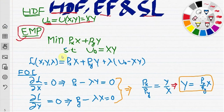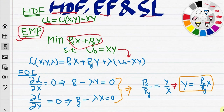The expenditure minimization problem is: minimize the budget, which is price of x times x plus price of y times y, such that utility is fixed at u0. The Lagrangian function is this objective function plus the Lagrangian multiplier times the constraint, which is u0 minus xy. The first-order conditions are that the partial derivative of L with respect to the three variables equals zero.